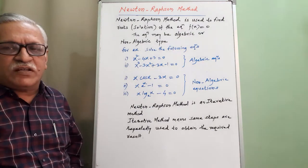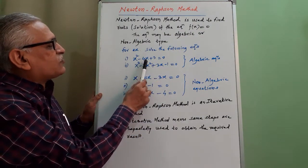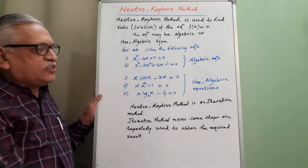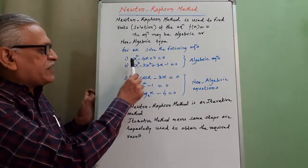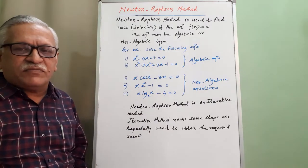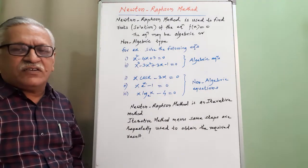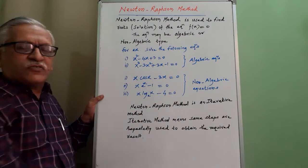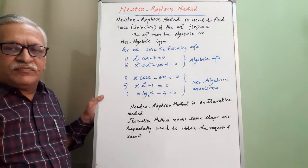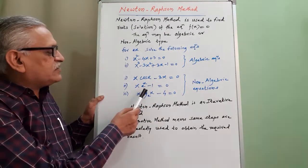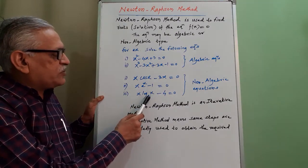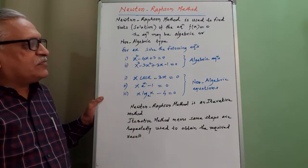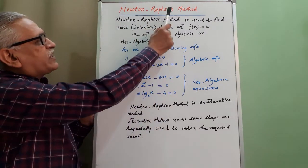The equation may be algebraic or non-algebraic. For example: x² - 4x + 3 = 0 and x³ - 3x² + 3x - 1 = 0. These are algebraic equations as they contain algebraic terms only. Any equation containing non-algebraic terms is called a non-algebraic equation. For example: x·cos(x) - 3x = 0 contains a trigonometric term; x·eˣ - 1 = 0 contains an exponential term; x·log_e(x) - 4 = 0 contains a logarithmic term. We can find the roots of such equations using the Newton-Raphson method.